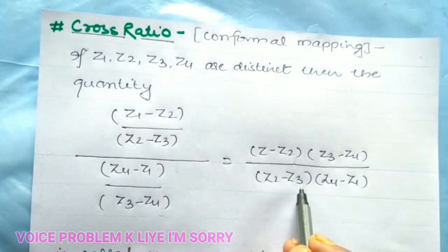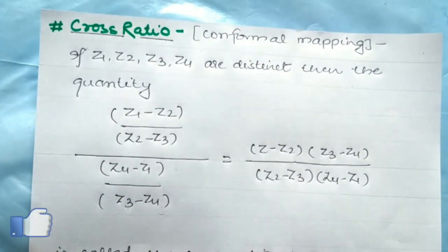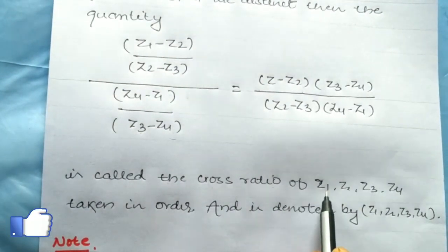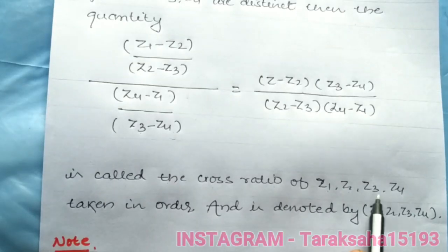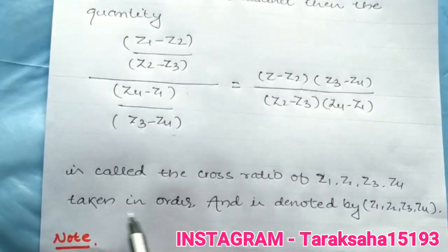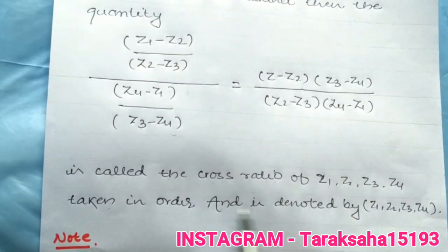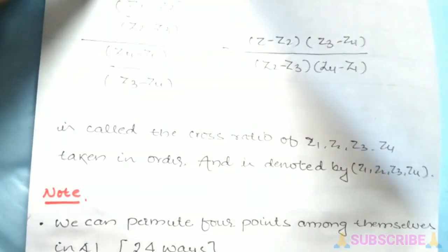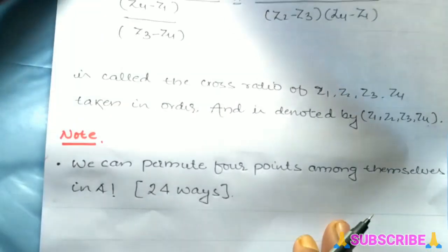This is called the cross ratio of z1, z2, z3, z4 taken in order, and it is denoted by (z1, z2, z3, z4) in a small bracket. An important note is that we can permute four points among themselves in factorial four ways.